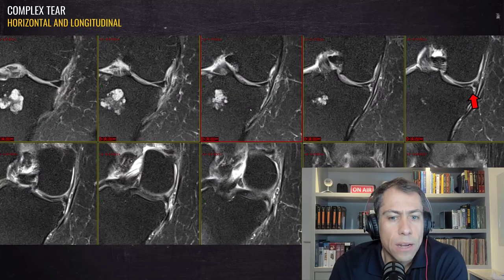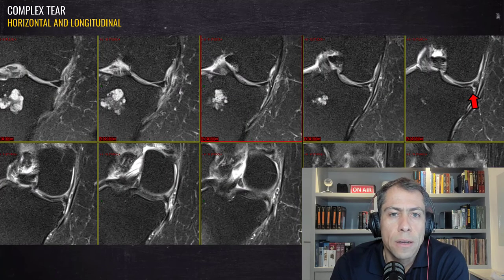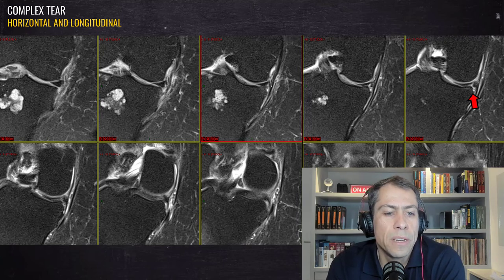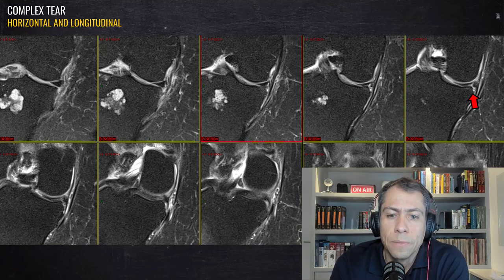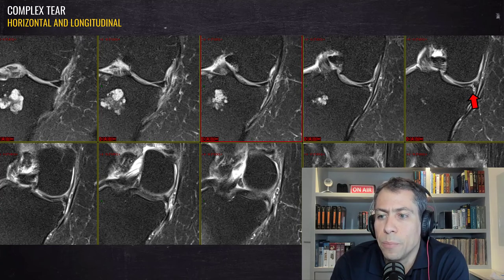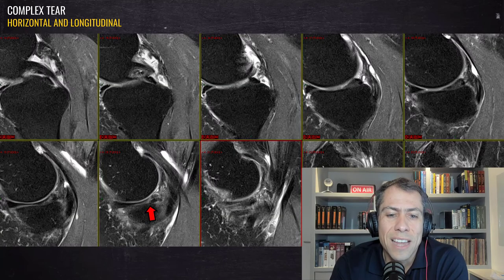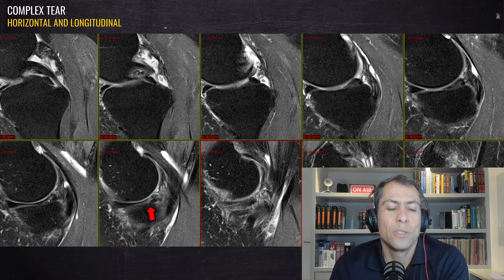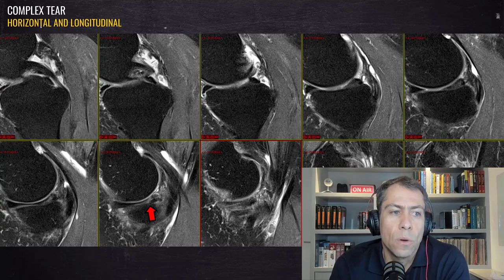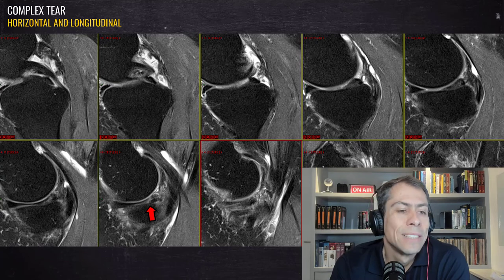In the second case, this is also a complex tear of the posterior horn, at the junction between the posterior horn and the meniscal body. In the coronal plane we can see a longitudinal vertical tear. When we look at the transition between the posterior horn and the meniscal body, we can also see another component — a horizontal tear in this region. On the sagittal plane we can see the horizontal component clearly. So this is another complex tear with two components: horizontal tear and vertical longitudinal tear.